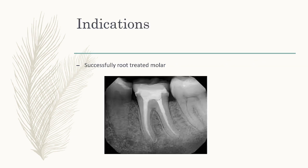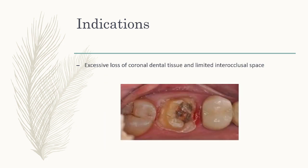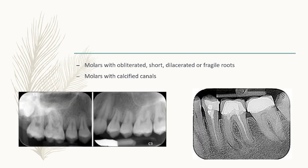Regarding indications — when can we use endocrowns? First, it should be done on successfully root canal treated teeth, particularly molars, and whenever we have excessive loss of coronal dental tissue and limited interocclusal space, or when the crown height is short. Also for molars with rotated, short, dilacerated, or fragile roots, and molars with calcified canals.